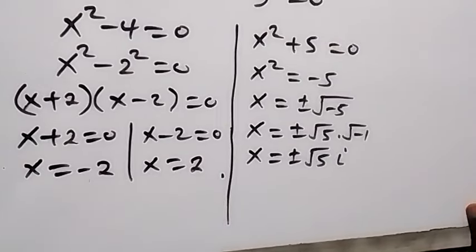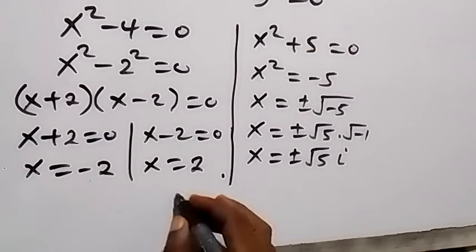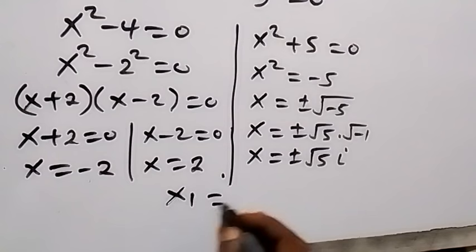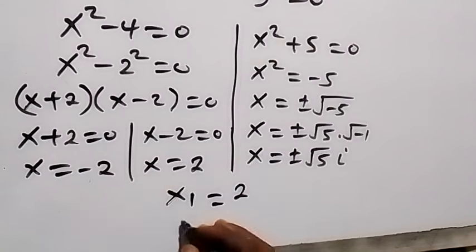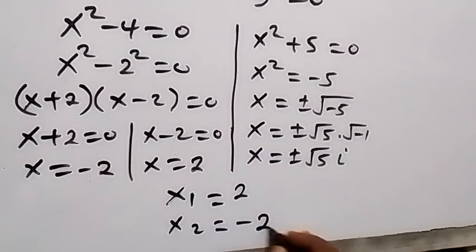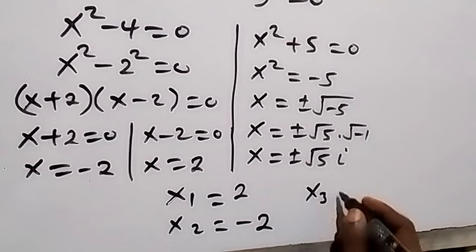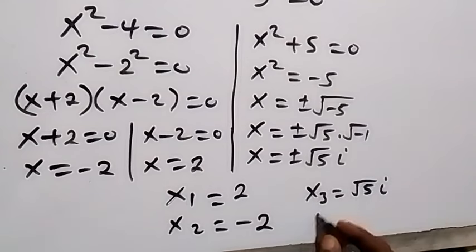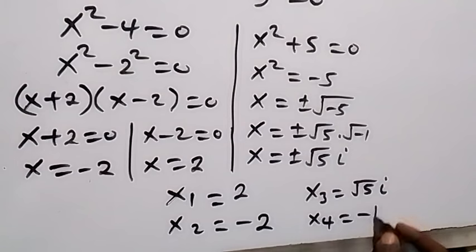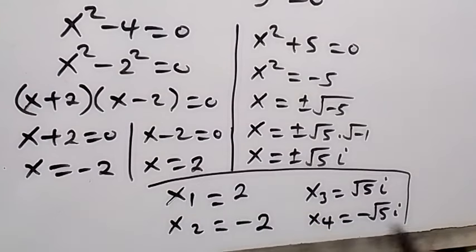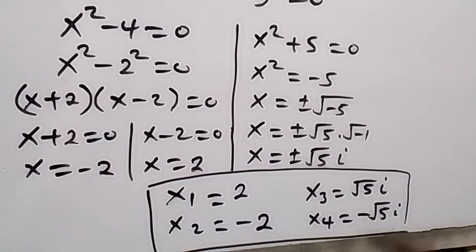So the solutions to this problem are: x₁ equals 2, x₂ equals minus 2, x₃ equals root 5 i, and x₄ equals minus root 5 i. When we substitute all these solutions into the original problem, we find they satisfy it. Thank you for watching — don't forget to give a thumbs up and subscribe to my channel. See you in the next class, bye for now.